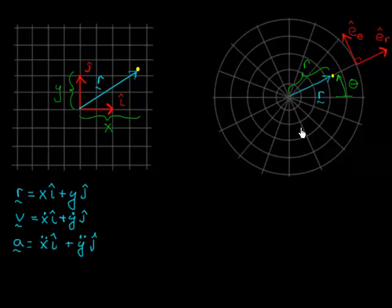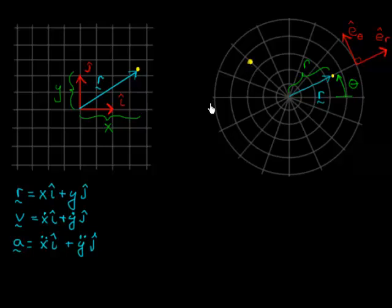When we write vectors, we use basis vectors in polar coordinates: e-hat-r and e-hat-theta. e-hat-r points radially outward; e-hat-theta is perpendicular to e-hat-r in the direction of increasing theta. This is different from Cartesian basis vectors i and j, in that e-hat-r and e-hat-theta change depending upon where you are. Different points have different basis vectors, whereas in Cartesian coordinates you get i and j no matter where you are in the space.